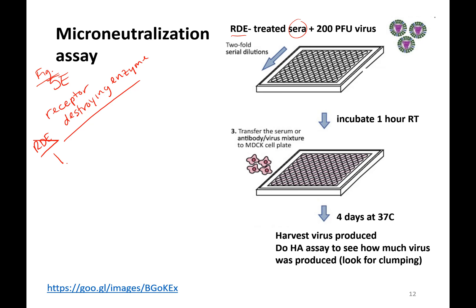RDE, which I looked up, is just a fancy name for neuraminidase. Remember on the spikes of influenza, you've got the HA spike and you've got the NA spike. Neuraminidase is important for releasing the virus after it has budded out of the cell.